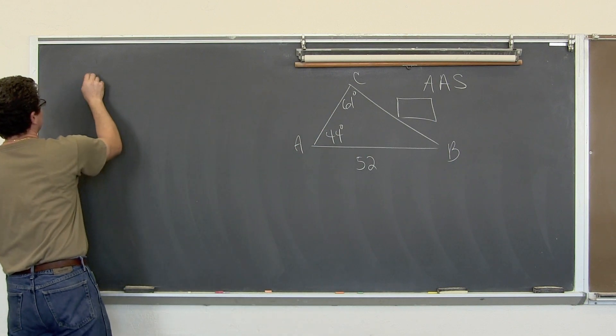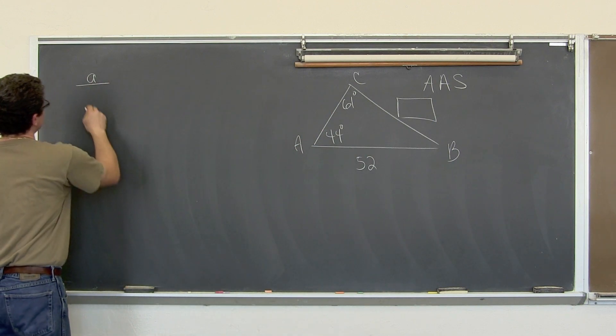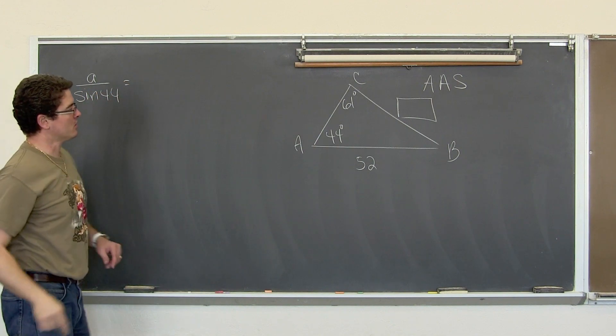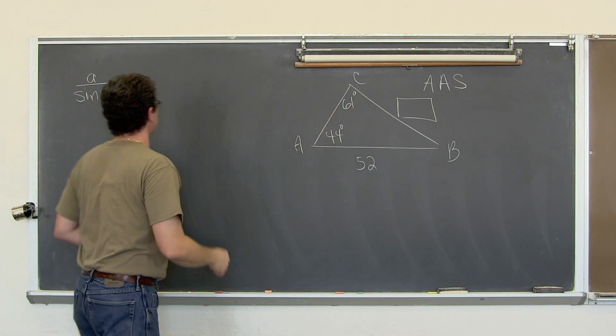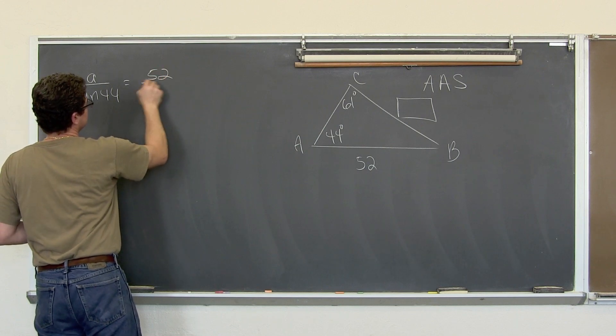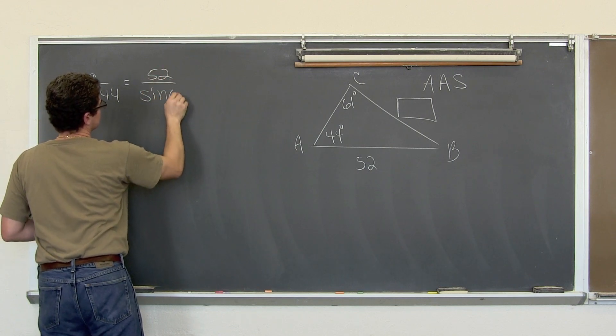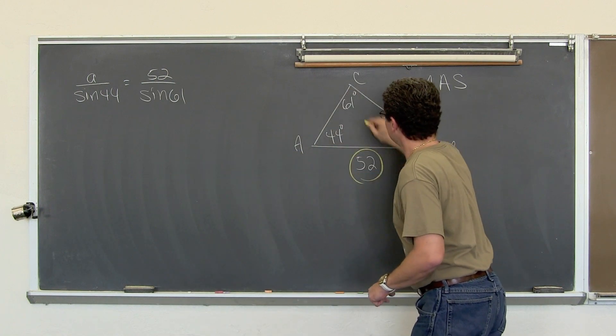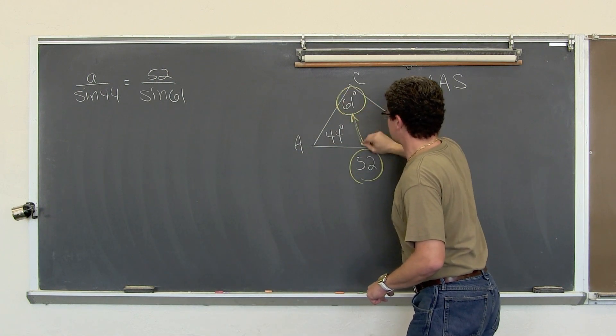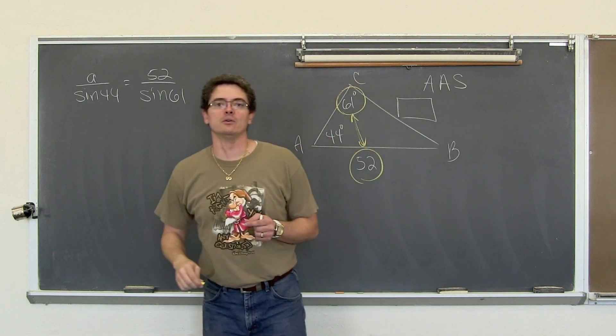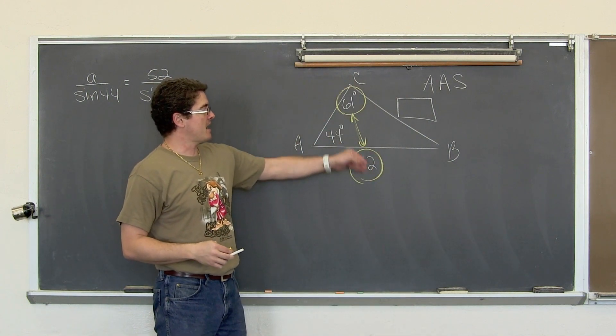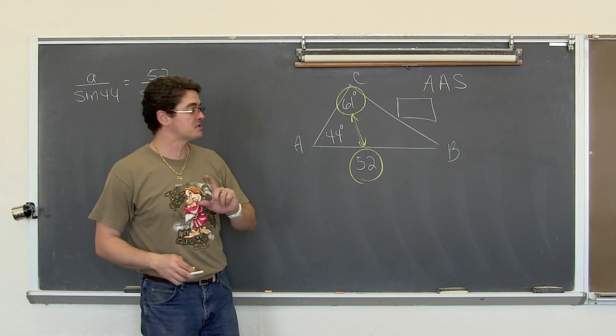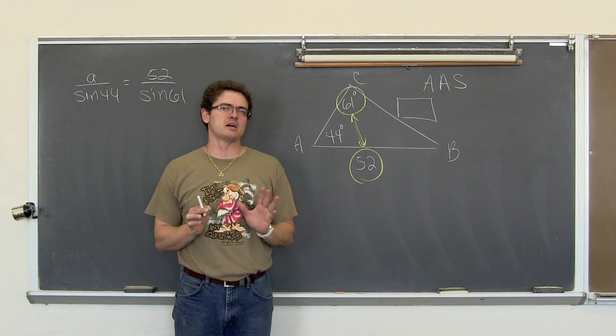Let's solve this triangle. Enough talking. We have got, let's find side a. So we have a, lowercase a, over the sine of 44 equals 52 over sine of 61.